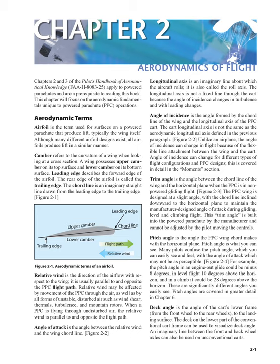Aerodynamic terms: Airfoil is the term used for surfaces on a powered parachute that produce lift, typically the wing itself. Although many different airfoil designs exist, all airfoils produce lift in a similar manner. Camber refers to the curvature of a wing when looking at a cross section. A wing possesses upper camber on its top surface and lower camber on its bottom surface. Leading edge describes the forward edge of the airfoil; the rear edge is called the trailing edge. The cord line is an imaginary straight line drawn from the leading edge to the trailing edge.